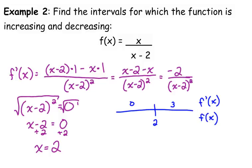F prime of 0. Let's look at that. When we plug 0 into the derivative, 0 minus 2 is negative 2, but then we square it, so it becomes positive, but the numerator is negative. So we've got a negative over a positive, so that's a negative.